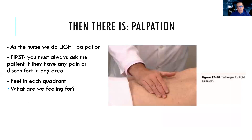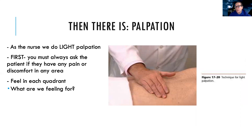After we listen, then we can palpate. We always do light palpation — I'm just feeling to see if they have tenderness. Before I press, I want to make sure they're not already having any tenderness. As I'm pressing, I want to be asking where does it hurt more, because that's going to help me figure out what's going on with the patient or where their problem is. I'm feeling to see if they have pain or discomfort. And if there's any noticeable mass or lump — like a hernia or something going on inside their intestines, or an enlarged organ — I definitely want to check for that.